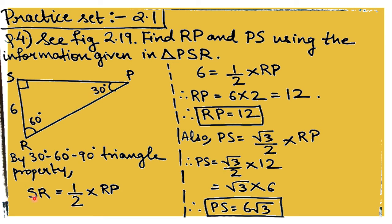SR is the side opposite to 30 degrees, so by the 30-60-90 theorem, SR equals half the hypotenuse. So SR = ½ × RP. Substituting SR = 6: 6 = ½ × RP, therefore RP = 12. The hypotenuse RP is 12 units.